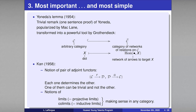The notions I want to mention were introduced fifteen years after the birth of category theory by the American mathematician Daniel Kan, who is still alive. Daniel Kan introduced the notion of pairs of adjoint functors — a relation between two functors going from one category to another in the two opposite directions.